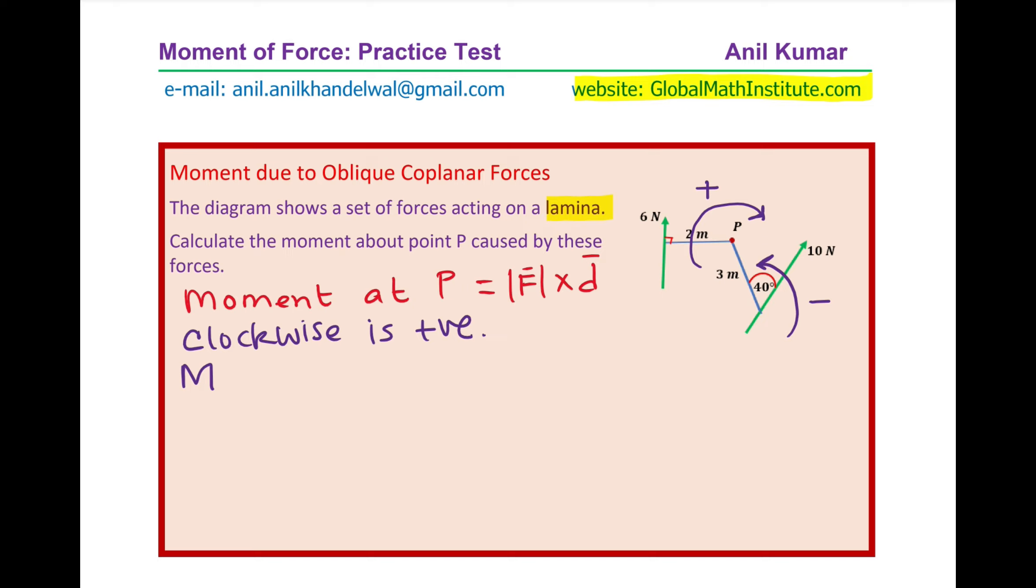The moment due to the first force which is 6 Newton, let's call this as moment 1, is basically 6 Newton times the distance between them which is 2 meters and that gives us 12 Newton meter.